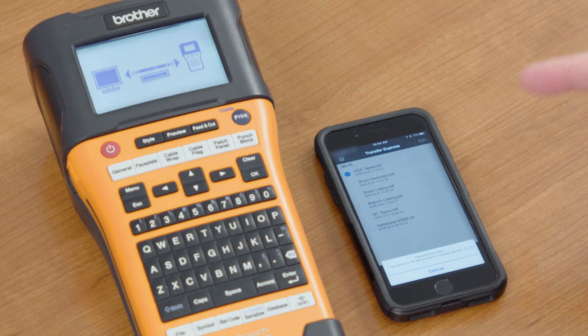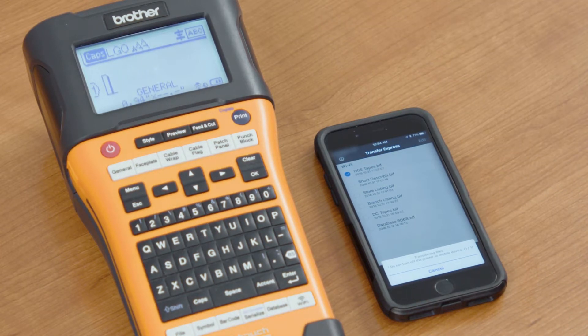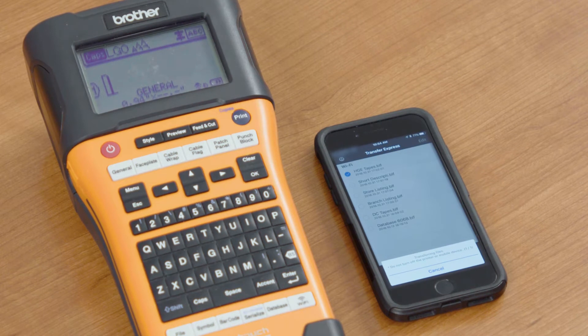That'll send the database from your mobile device directly over to the printer. And when you want to call up the data, you can simply select that database button, call up the file that you sent over to the machine earlier, and you'll have all of your information in the machine.